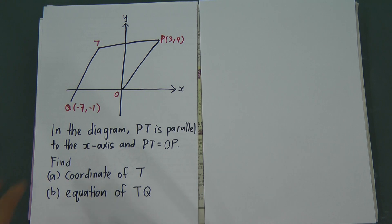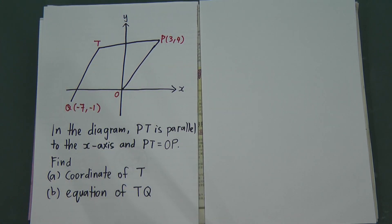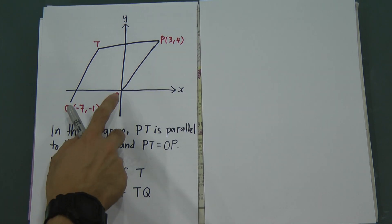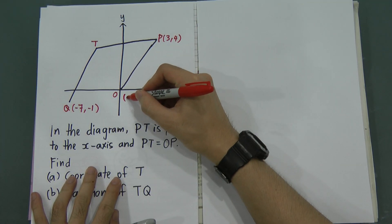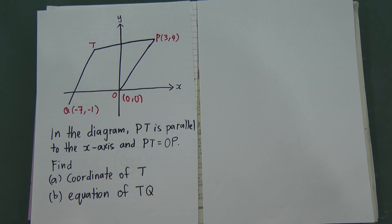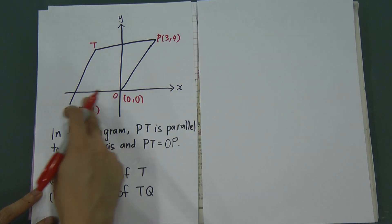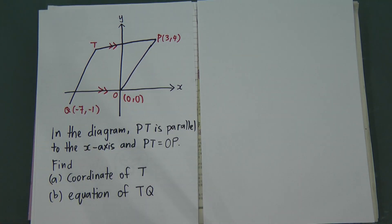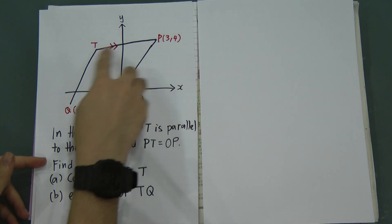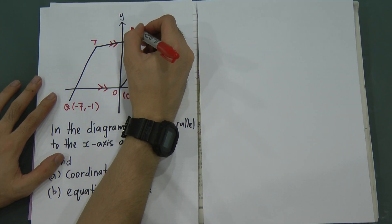Let's have a look at the question. You will see the x-axis, y-axis, and four coordinates. As I mentioned in the last video, when you see the coordinate O, that is the origin, and the origin will always mean the coordinate (0, 0). So in your exam, when you see O, write (0, 0). PT is parallel to the x-axis. When a line is parallel with the x-axis, that means one thing: the gradient will equal zero.